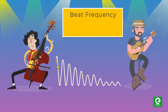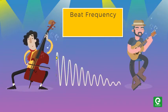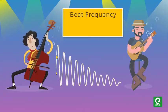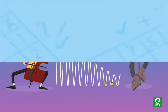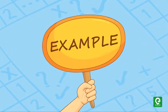Mathematically, beat frequency is the difference between the frequencies of two waves, which is given by |f₂ - f₁|. Let's take an example to understand this concept better.